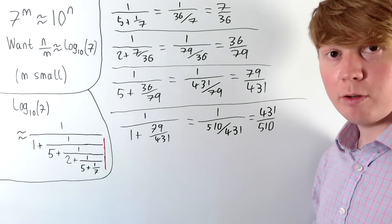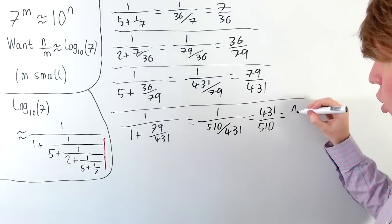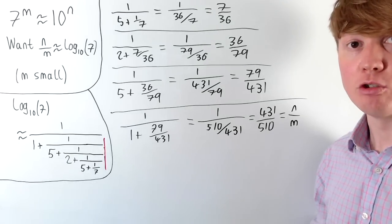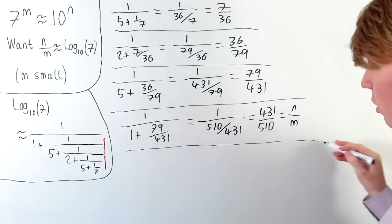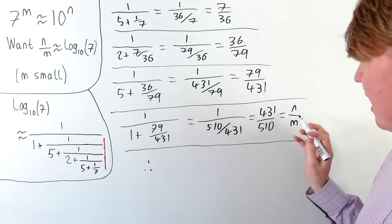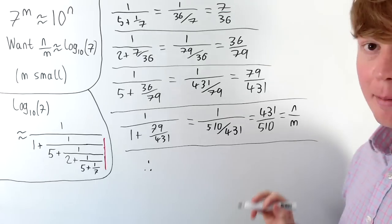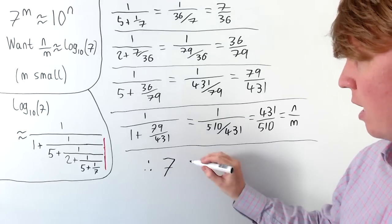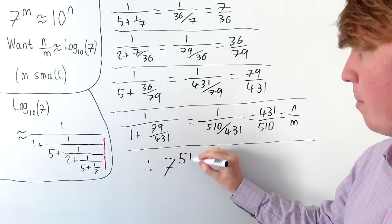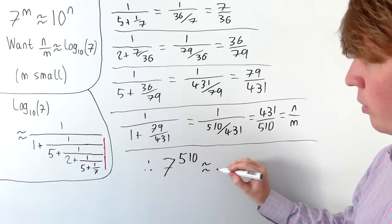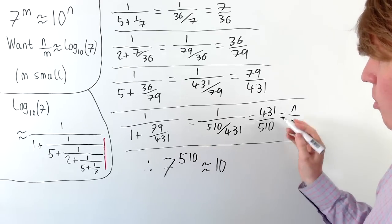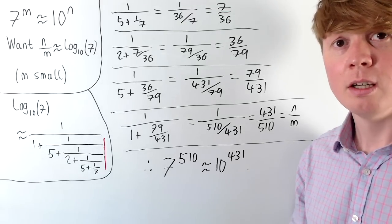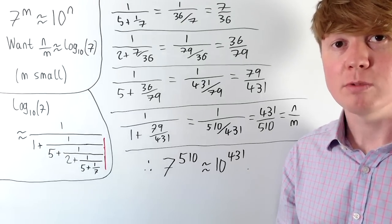This gives us our fraction: n equals 431 and m equals 510. So we can conclude that taking n as 431 and m as 510, 7 to the power of 510 should be approximately equal to 10 to the power of 431. This is where the approximation comes from.